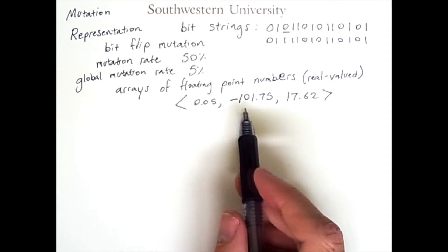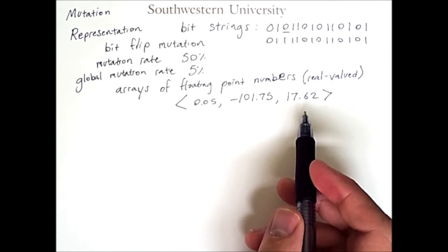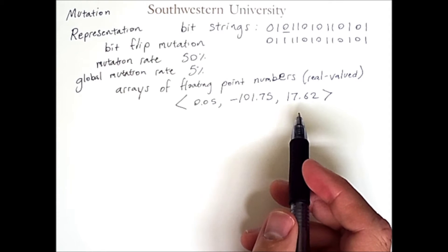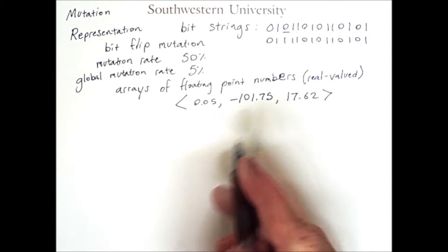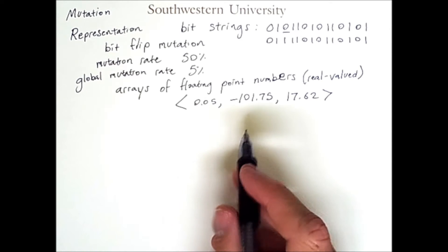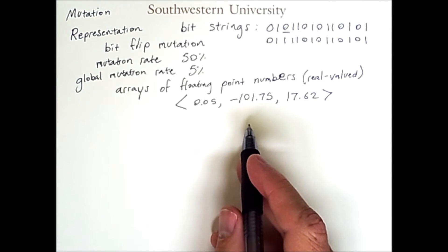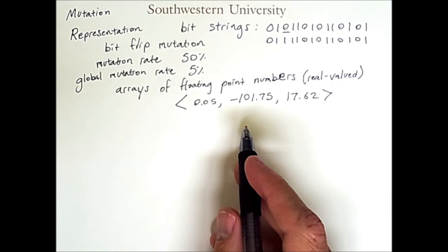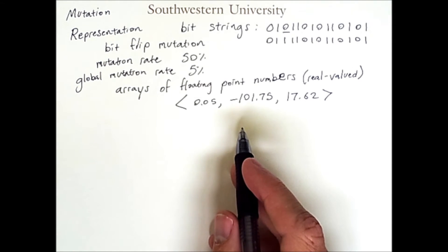Such a representation is useful because you can usually solve a problem by specifying a sequence of parameter values. Typically, each number will have some range that is restricted to. Although, another option is to simply confine all numbers to a common range, for example negative 1 to 1, and then map those results to the target range appropriate for your problem.